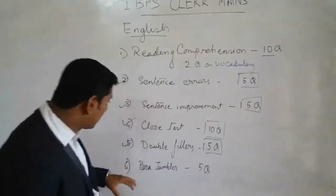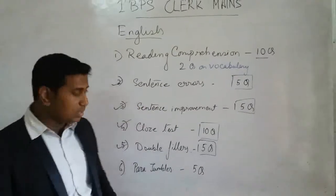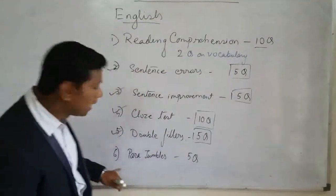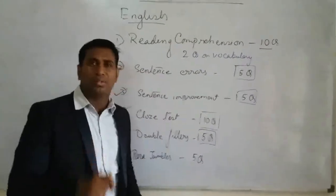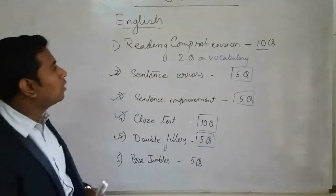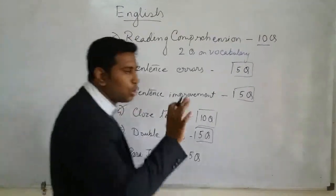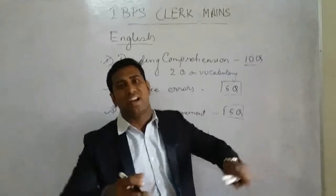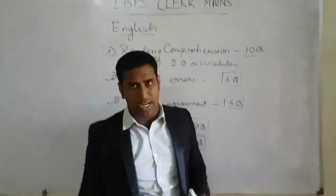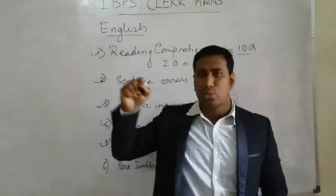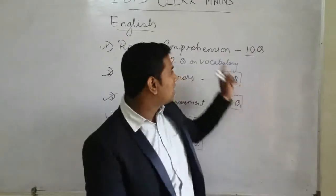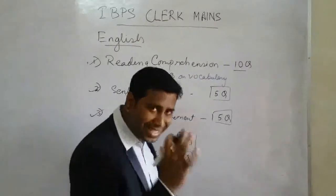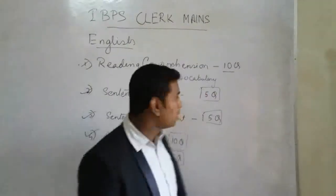Reading comprehension has 10 questions and para jumbles has 5 questions. See which is easier — if the para jumbles passage is story-based, solve it first; if it is economy-based, leave it and start with reading comprehension. For reading comprehension, first read the whole passage — it may take 5 minutes — but then you can solve 8 questions in just 5 minutes. Don't read the questions first; read the full passage first.